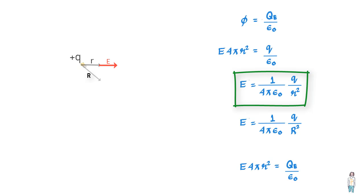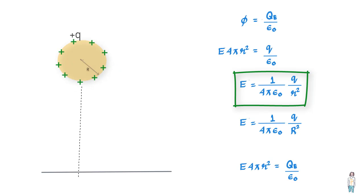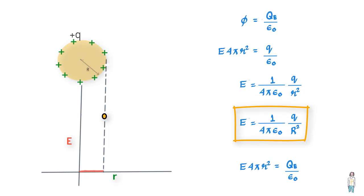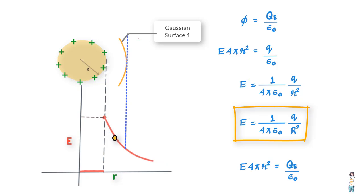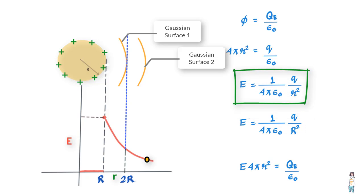If you were to make a graph of field value from center of the sphere versus the distance from the center, you get zero field value from radius r=0 to r less than capital R. Then at r equal to capital R, the E value jumps to 1/(4πε₀) × Q/R², and then it falls as the square of the distance r from the center, equaling 1/(4πε₀) × Q/r².